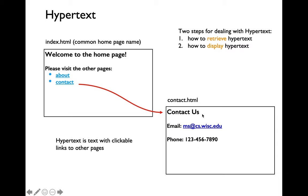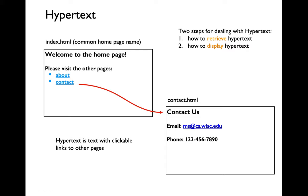There are a couple of things when it comes to dealing with hypertext in general. First, how exactly do you retrieve the content pointed to by the hypertext link — how do you go from this word to the actual document? Second, how exactly do you render the content which is in HTML form on your web browser? Your browser is a type of client program — it's a special program written to receive an HTML file, parse it, and render it in a human-readable format.